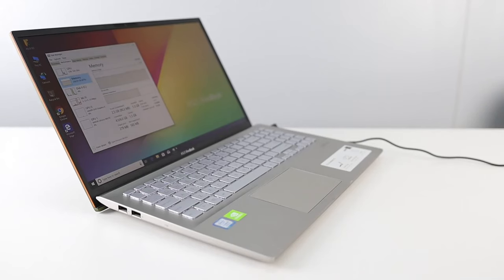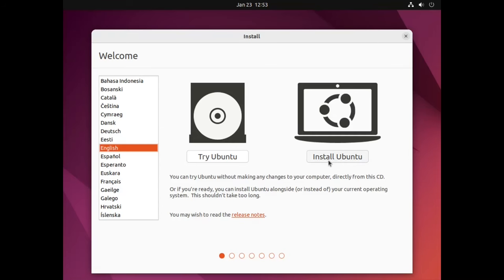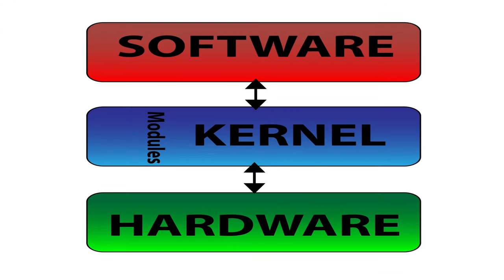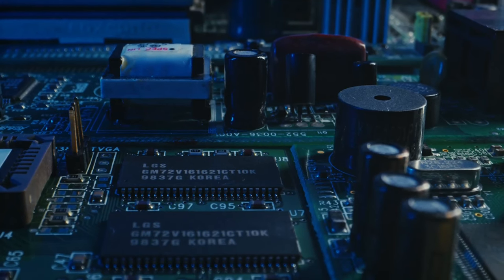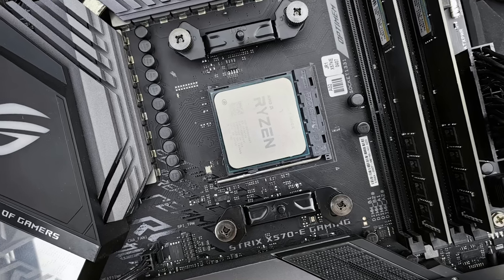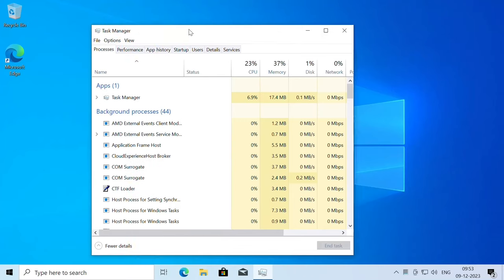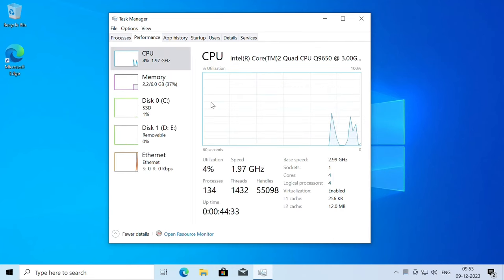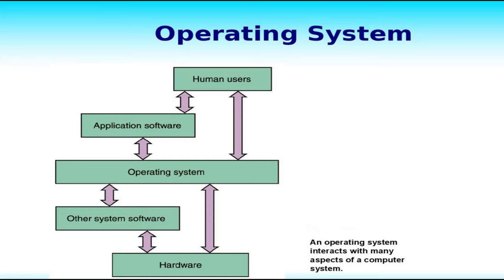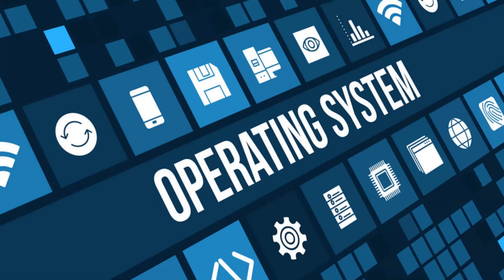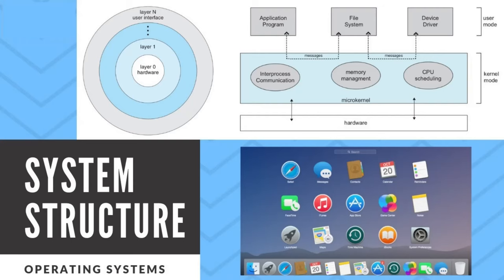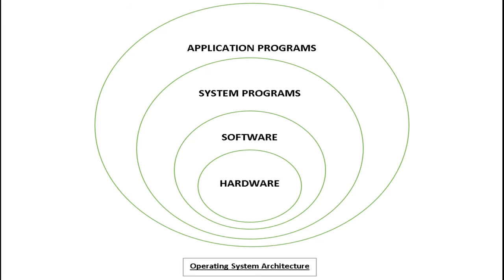An operating system is just like any other program you install on your computer, but it has extra privileges which allow it to manage and interact with the computer's hardware like memory, storage and CPU. Operating systems also manage software resources to provide common services for computer programs. It is the core connection between hardware, software and applications. You can think of an operating system as an intermediary program that stands between your computer and all the programs you run on it.